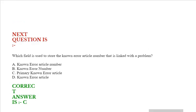Which field is used to store the known error article number that is linked with a problem? Option A: Known error article number. Option B: Known error number. Option C: Primary known error article. Option D: Known error article.